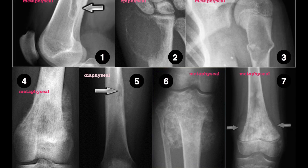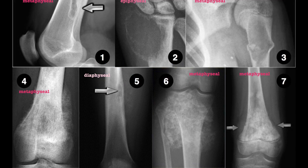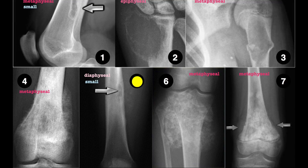The second S is for Size. Large lesions are usually indicative of malignancy. Just by looking at the x-ray we can say that lesions 1 and 5 are relatively small lesions in comparison to lesions 2, 3, 4, 6 and 7, which we can say are relatively large lesions.